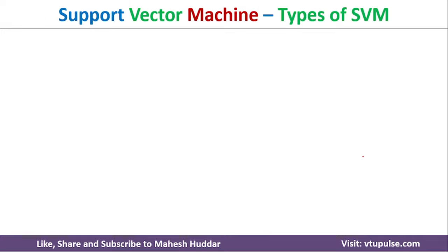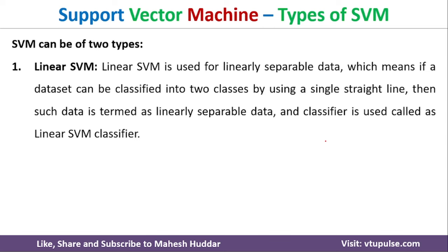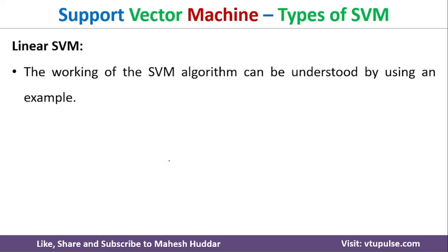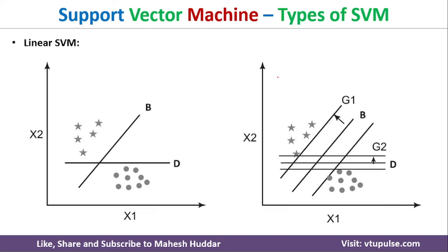There are mainly two types of SVM: linear SVM and non-linear SVM. Linear SVM is where we can separate the data with the help of a straight line. If we are unable to draw a straight line to divide the dataset into classes, such SVM is called non-linear SVM. Let's consider an example to understand linear SVM in detail.